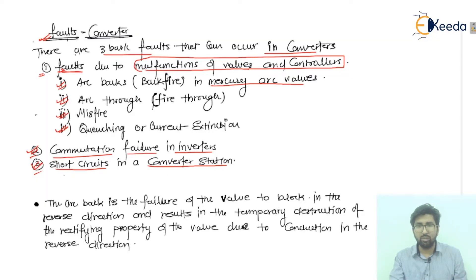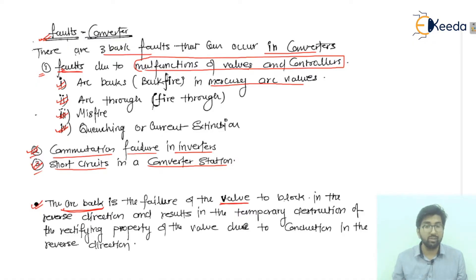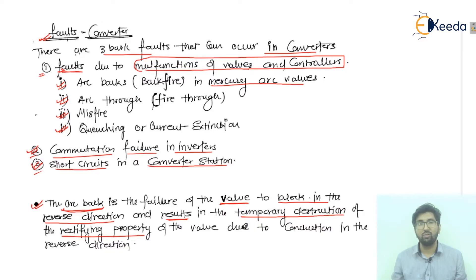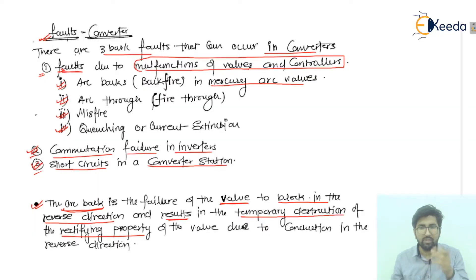Now let's talk in detail about arc back and backfire. Arc back is the failure of the valve — when the valve gets failed, backfire can be seen. That is blocking in the reverse direction operation, which results in temporary destruction of the rectifying property — that is, the AC to DC conversion. For a short duration of time, due to this backfire, the temporary destruction of the rectifying property means the AC to DC conversion is affected due to the backfire of the valve.